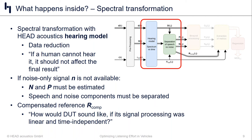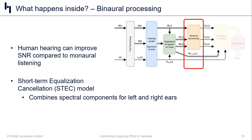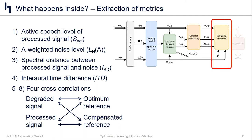Once that's done, we move into the binaural processing phase. This is key because humans are binaural and, being binaural, we have the ability to improve the signal-to-noise ratio of signals relative to a monaural listening situation — so we want the algorithm to replicate that. In this case, we use something called Short-Term Equalization Cancellation, the STEC model, where we perform spectral component combinations from the left and the right ear.